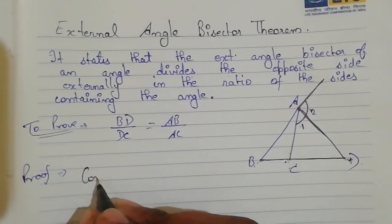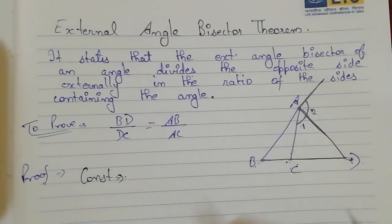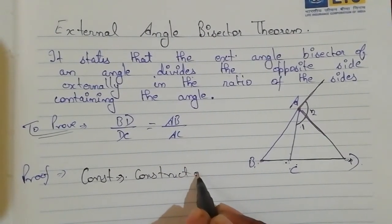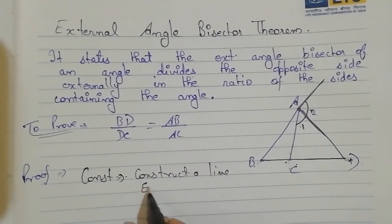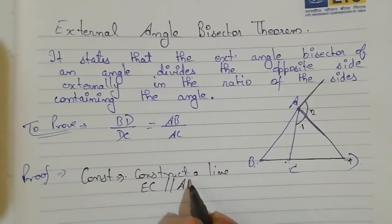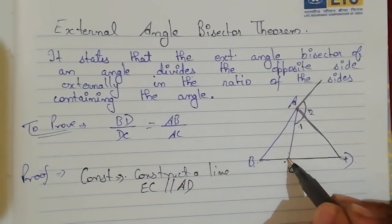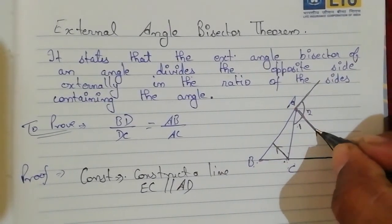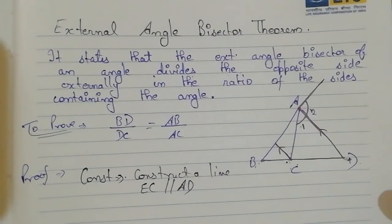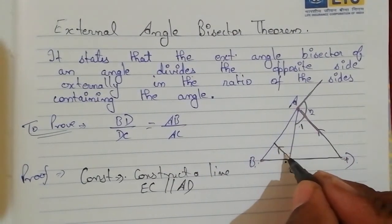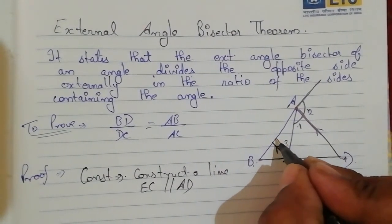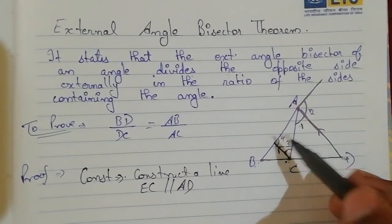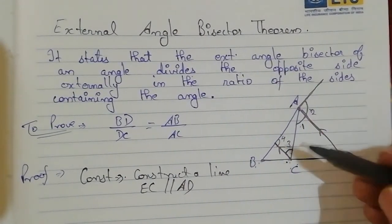For the proof we need a construction. We construct a line EC parallel to AD. We name one angle as angle 3 and the other as angle 4.